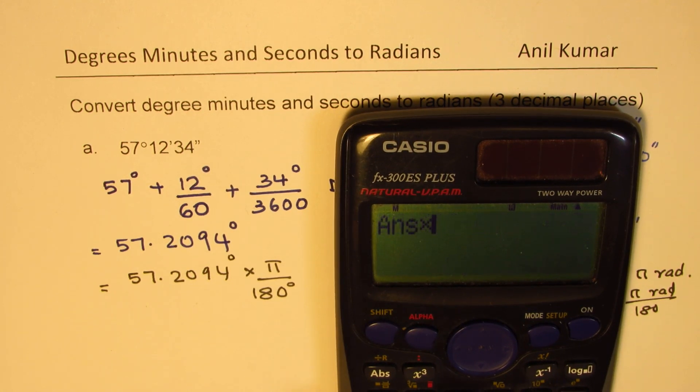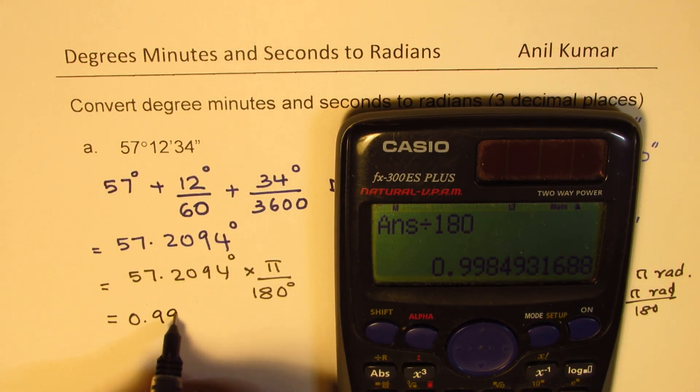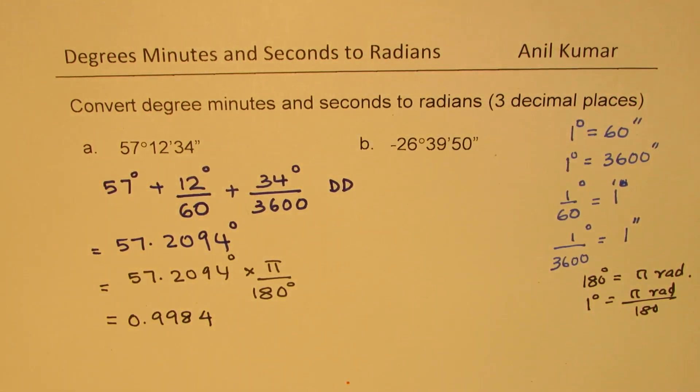Now let's do this calculation. So we have this 57.2094. We'll actually multiply this by pi, and then we'll divide by 180. So when you do that, you get 0.9984.